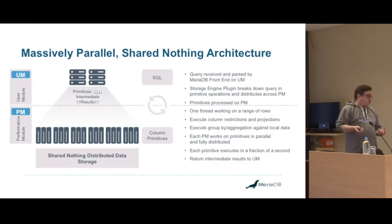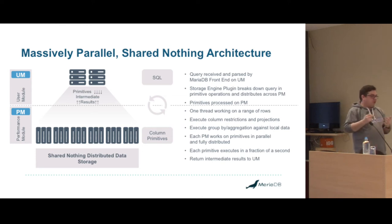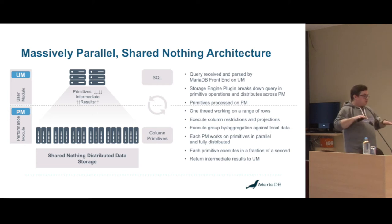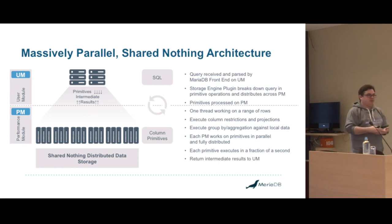ColumnStore is massively parallel. We have concepts of user modules and performance modules — they're terribly named, but there's been lots of debate on renaming them. A user module is essentially a server plugin plus a few extra processes. It breaks up a query into lots of primitive job steps — a join would be a primitive job step, an aggregate is another — and these are all chained together. These are sent to performance modules which know about their own data. A single query can use all the processes on every node simultaneously.